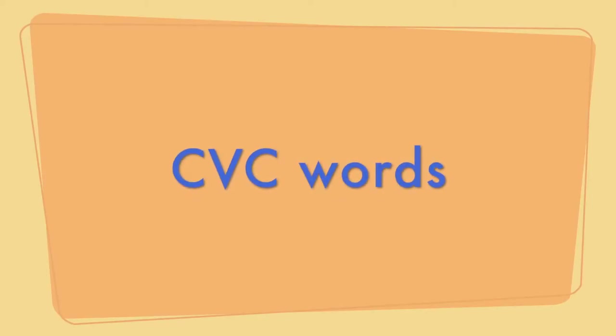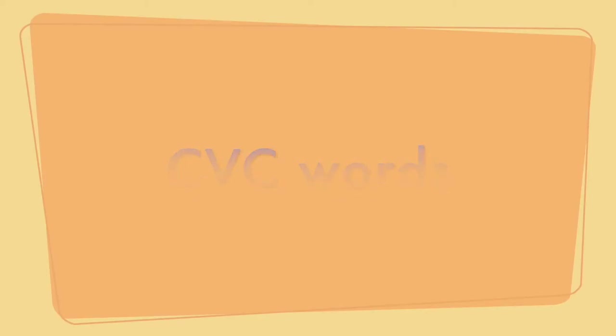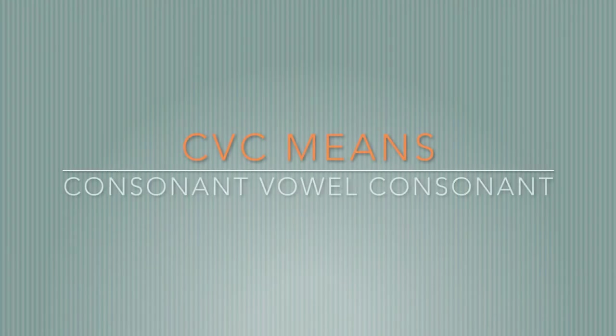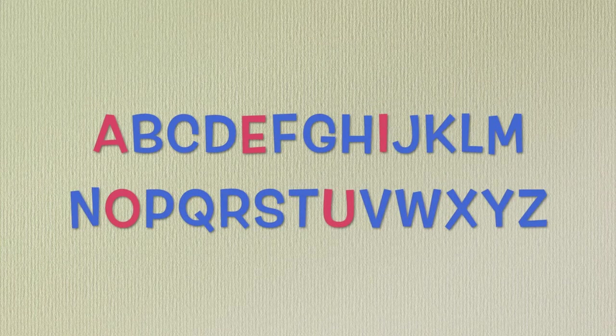Today's lesson is on CVC words. CVC means consonant, vowel, consonant. There are 26 letters in the English language. Of those letters, 5 of them are vowels: A, E, I, O, U. The rest of the letters are consonants.